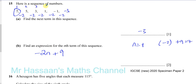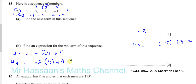So we can test this — the fourth term, for example, will be given by minus 2 times 4 plus 9, which gives minus 8 plus 9, which gives 1. So you can see it's working. If we try the fifth term, minus 2 times 5 is minus 10, minus 10 plus 9 is minus 1, which is correct. Minus 2 times 3 is minus 6, minus 6 plus 9 gives plus 3. It works.